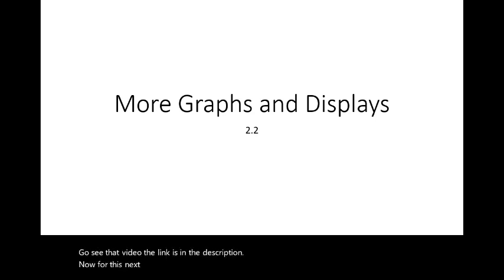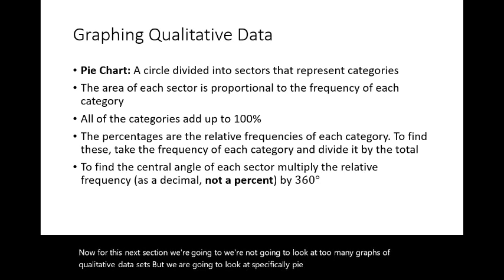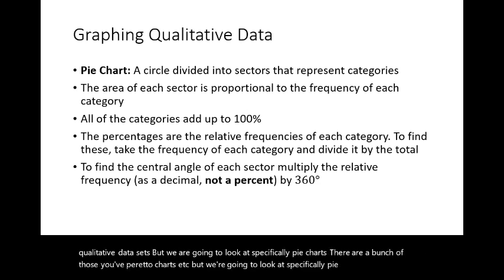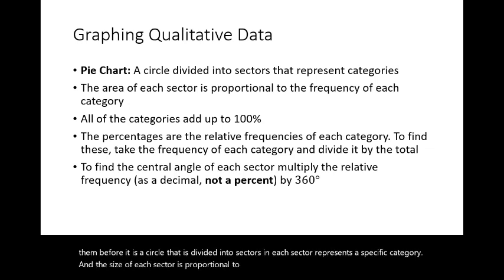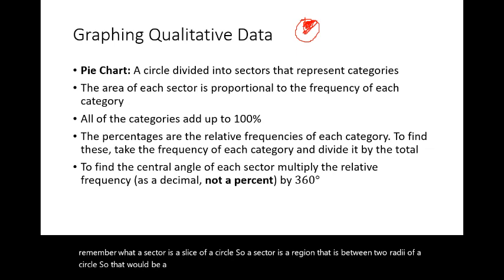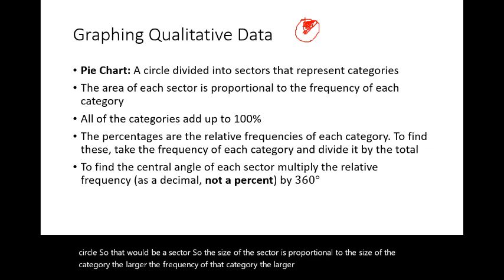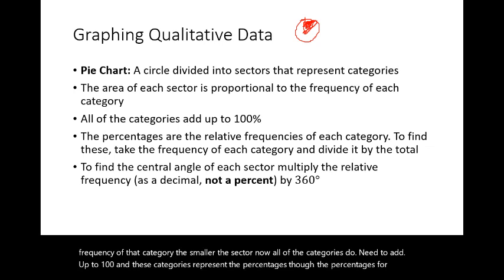Now we'll look at pie charts as a graph for qualitative data. A pie chart is a circle divided into sectors, where each sector represents a specific category. The size of each sector is proportional to the frequency of that category. All categories must add up to 100%, and the percentages are the relative frequencies of each category.